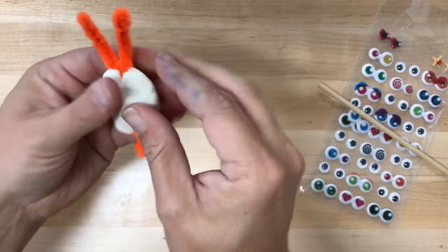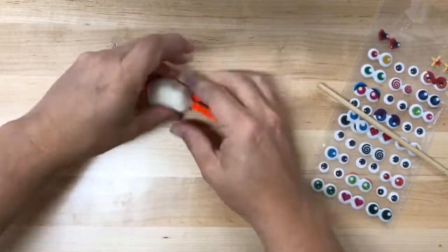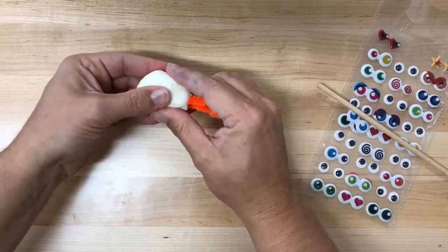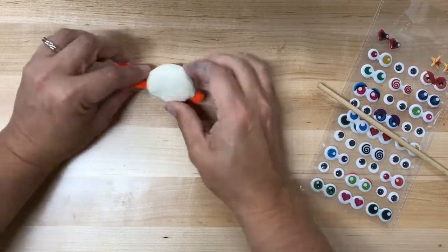Go ahead and press this clay together around the wire. Try to get rid of your seam and then shape the shell. It doesn't have to be perfect. You just want something that kind of looks like a snail.